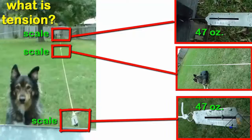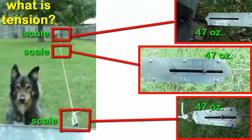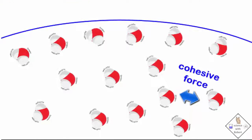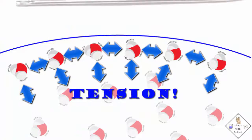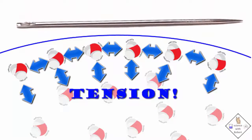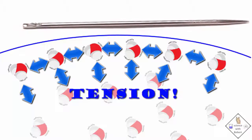Each end of the rope reads about 47 ounces, but what about the middle? Will it read double the force? Nope. All the scales read the same. Tension is the same everywhere in a rope. The molecules on a liquid surface are not exactly aligned like a rope, but the molecules on a liquid surface are under tension. And as long as this tension between the surface molecules is not broken, objects that are even more dense than the liquid can remain on a liquid surface and not sink.